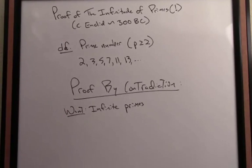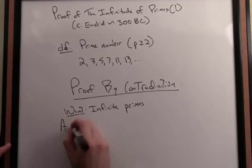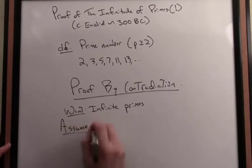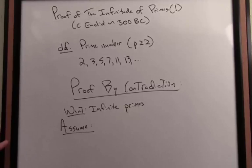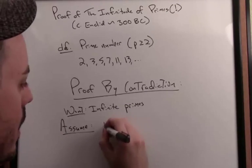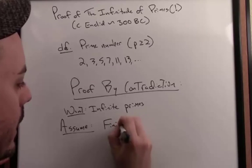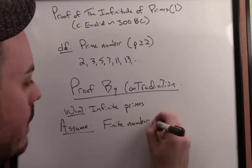In other words, we want to show that there are an infinite number of primes. So what we're going to assume, contrarily, is that there aren't an infinite number of primes. In other words, there are a finite number of primes.